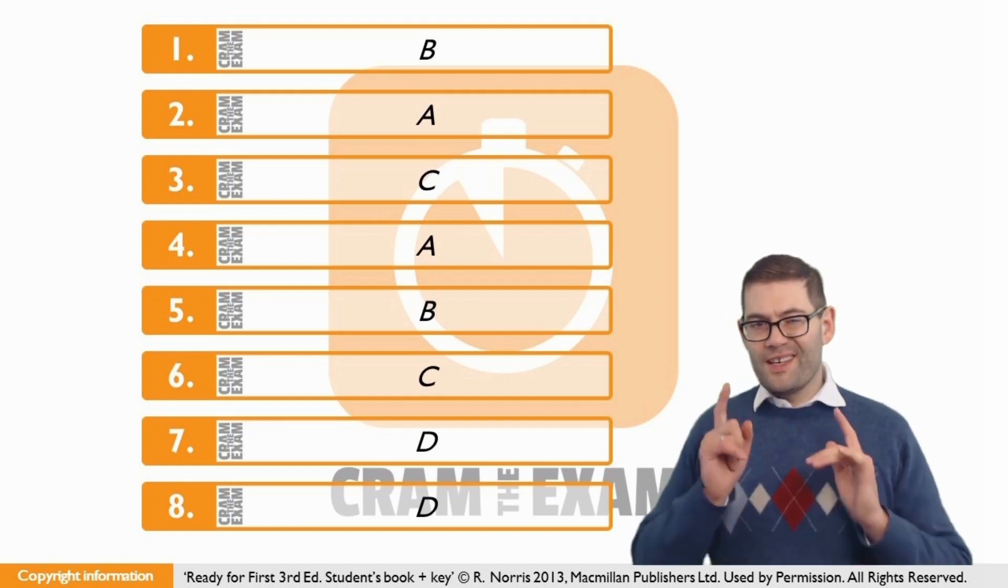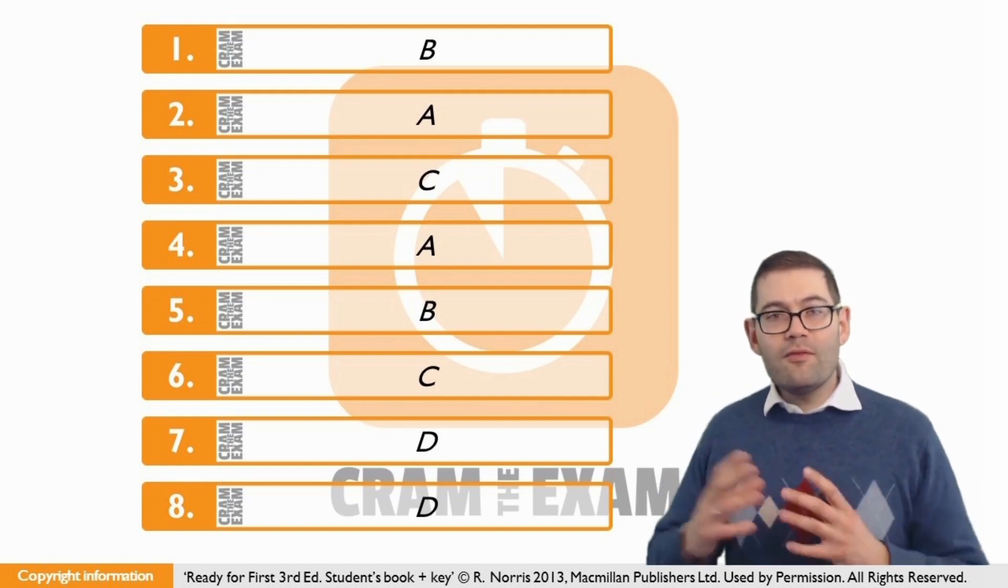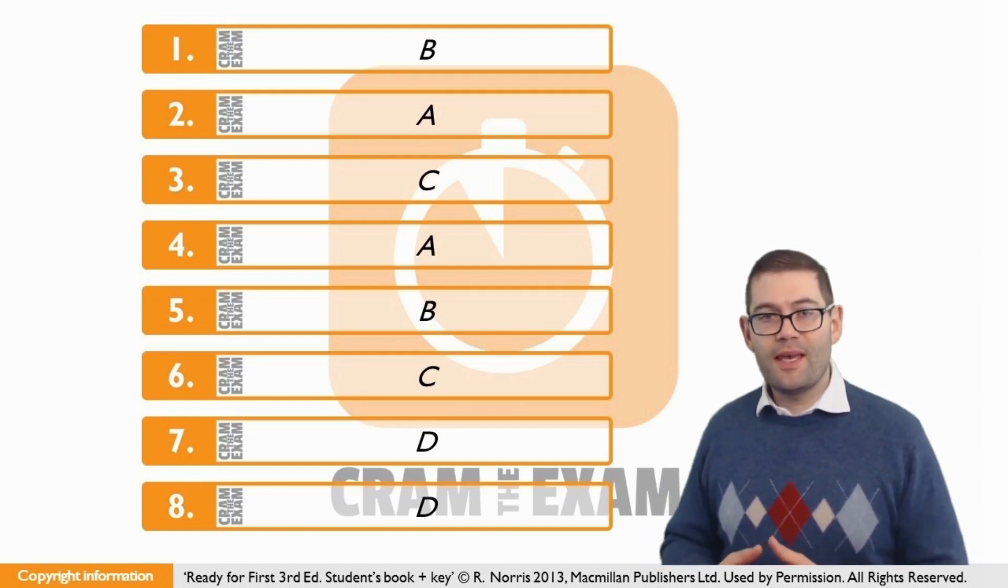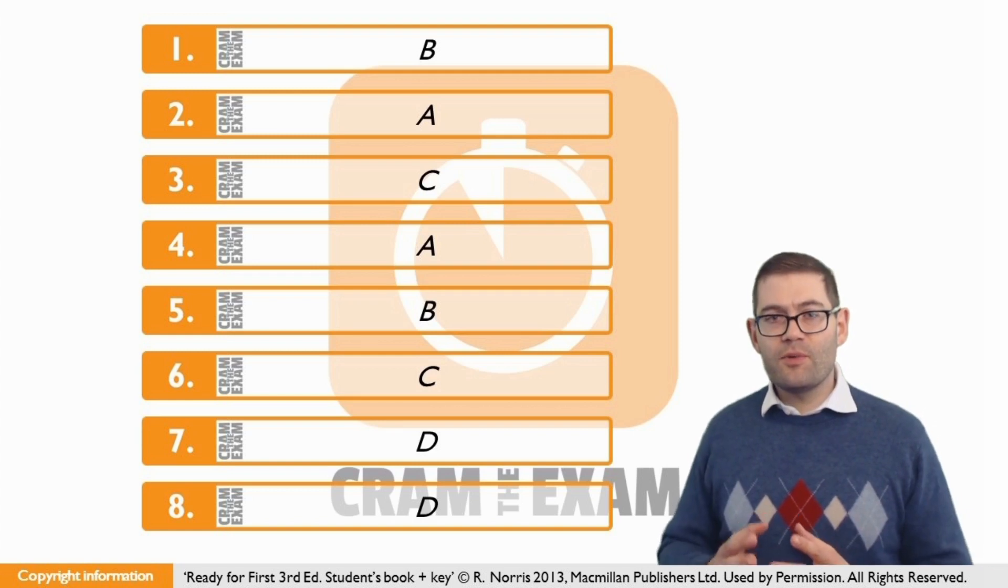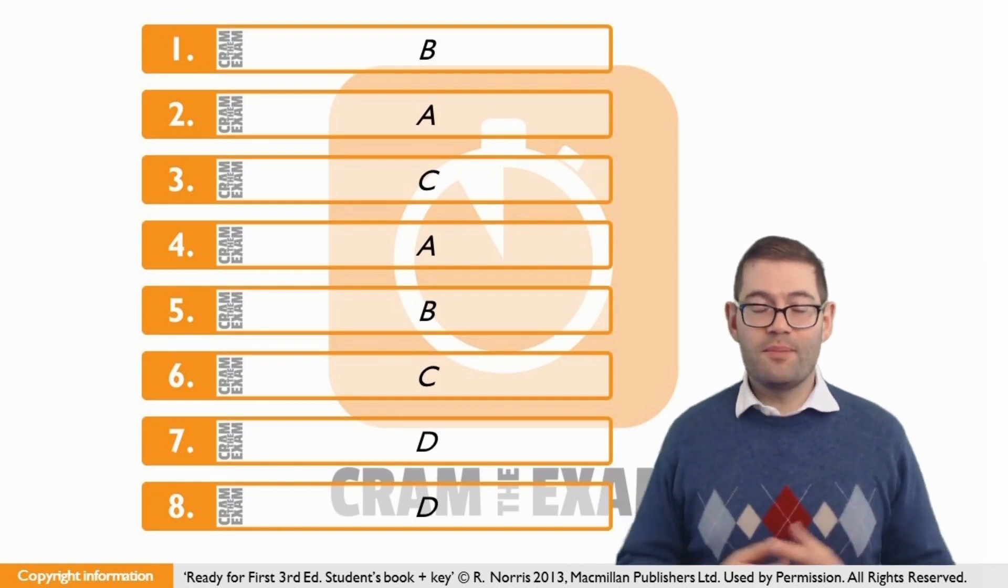Question number six, remember the context. We've just learned in the paragraph before that he no longer performs, that he does something else. So we need to choose a verb which means the same as no longer doing something. Of course, there's only one answer here, and that is to give something up.